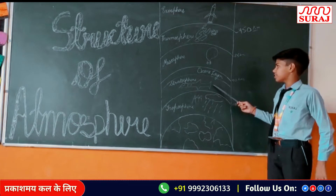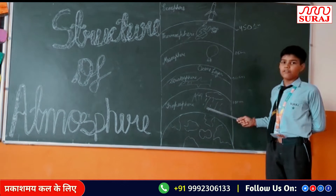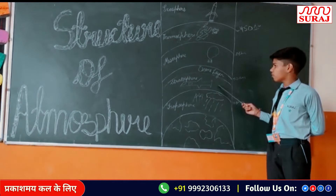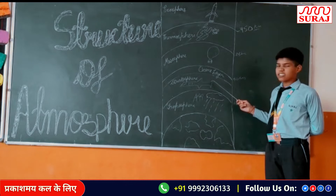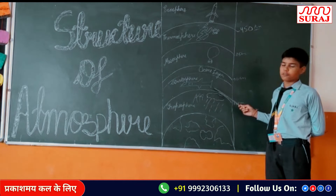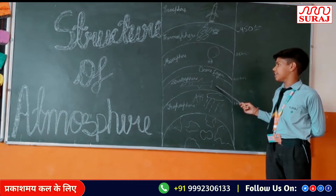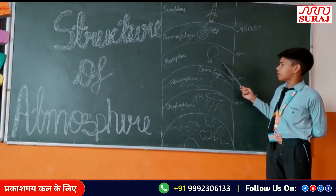Second, stratosphere. Stratosphere contains the ozone layer which protects from ultraviolet rays of the sun. It is also called the ozone sphere. Supersonic jets fly in this layer.